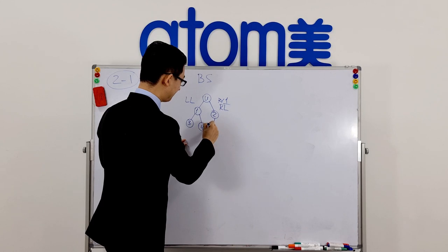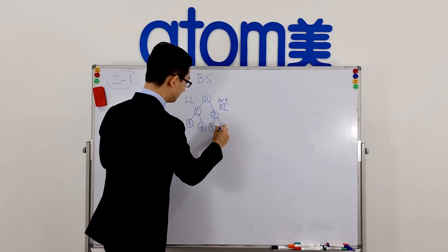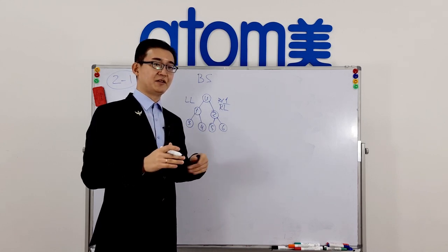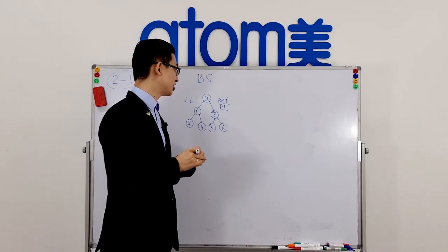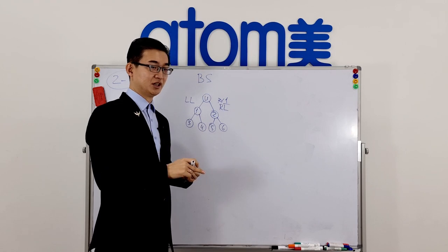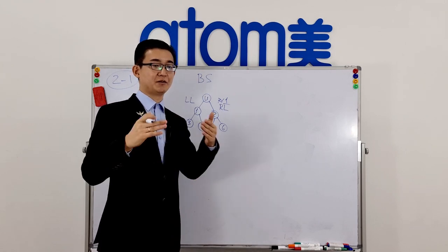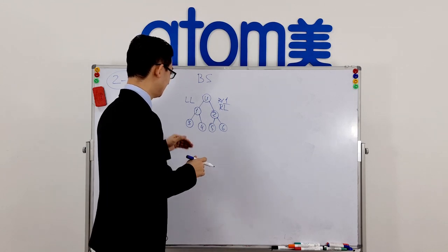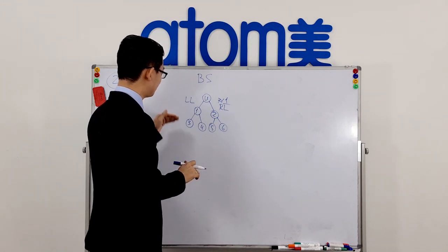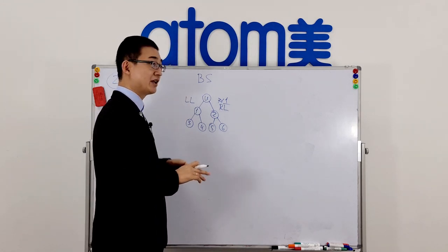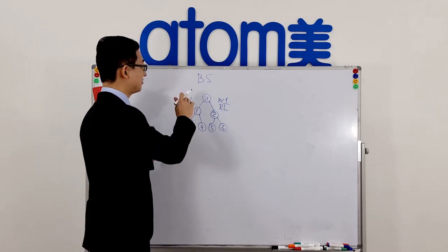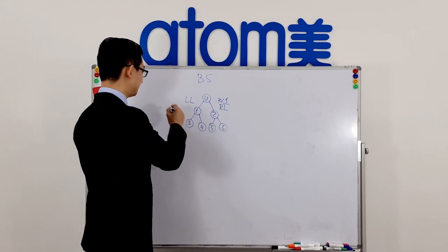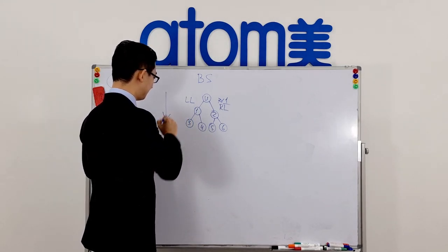The next partners you register will go down under those you have already registered. So partners number three, four, five, and six can be registered further down the structure. There is a certain strategy for the most effective structure building — we'll cover that in the final lesson of this section, video number two seven. Right now all you need to understand is that we have a binary structure, and the binary in Atomy has no downsides — it's not a classic binary.